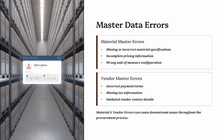Typical material master errors include: Wrong Valuation Class, which leads to postings hitting the wrong GL accounts; Incorrect Unit of Measure, causing quantity mismatches between PO, GR, and invoice; and Missing Purchasing View, meaning the material cannot be used in procurement. On the vendor side, common errors include Wrong Payment Terms, incorrect due dates for vendor invoices, and Tax Code Mistakes causing incorrect VAT calculation or posting rejections.